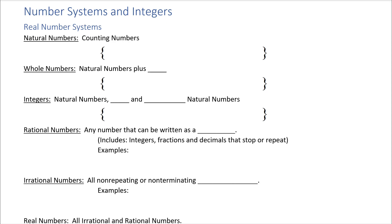The first category is called the natural numbers, also known as the counting numbers. These are the ones you learned in preschool: one, two, three, four — and it keeps going. Any number you can count on your fingers, given enough time, is a natural number. I remember it because your fingers are natural — naturally occurring on your hands.